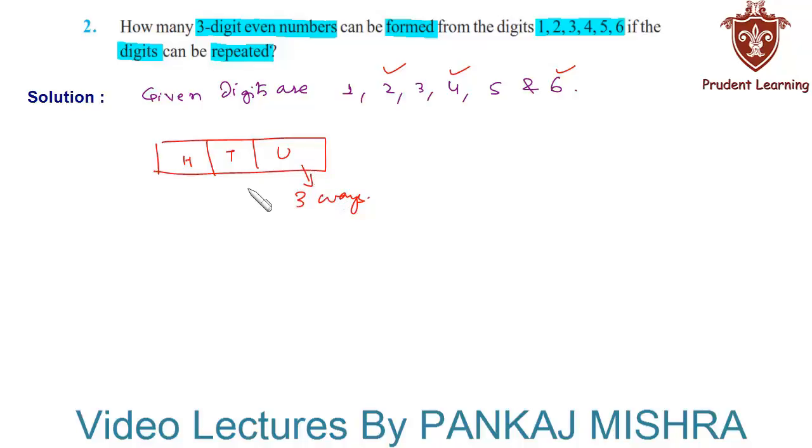Now since the digits can be repeated, this tens place can be occupied by any one of the six digits in six different ways. Similarly, this hundreds place can be occupied by any one of the six digits in six different ways.